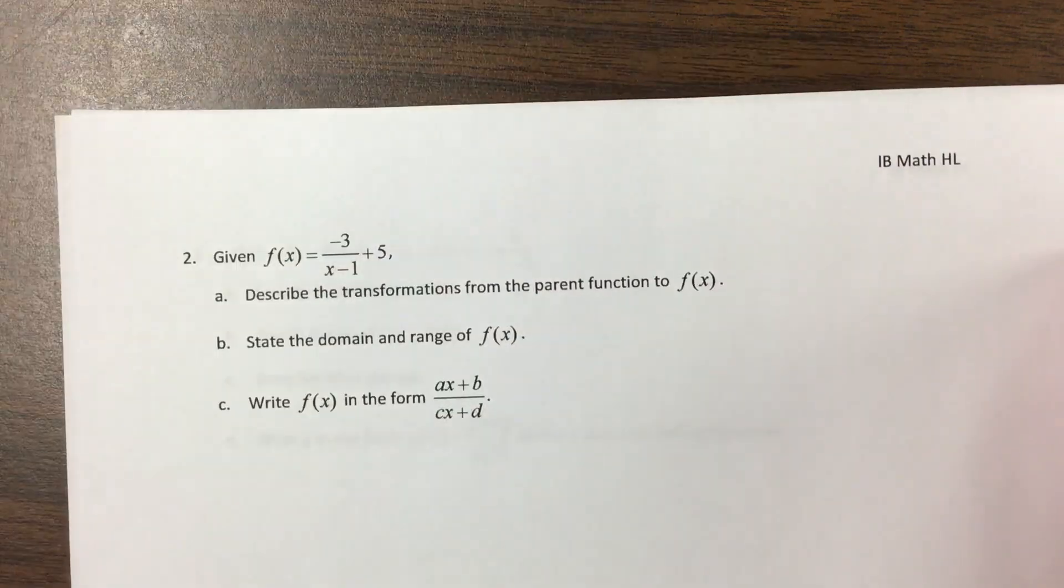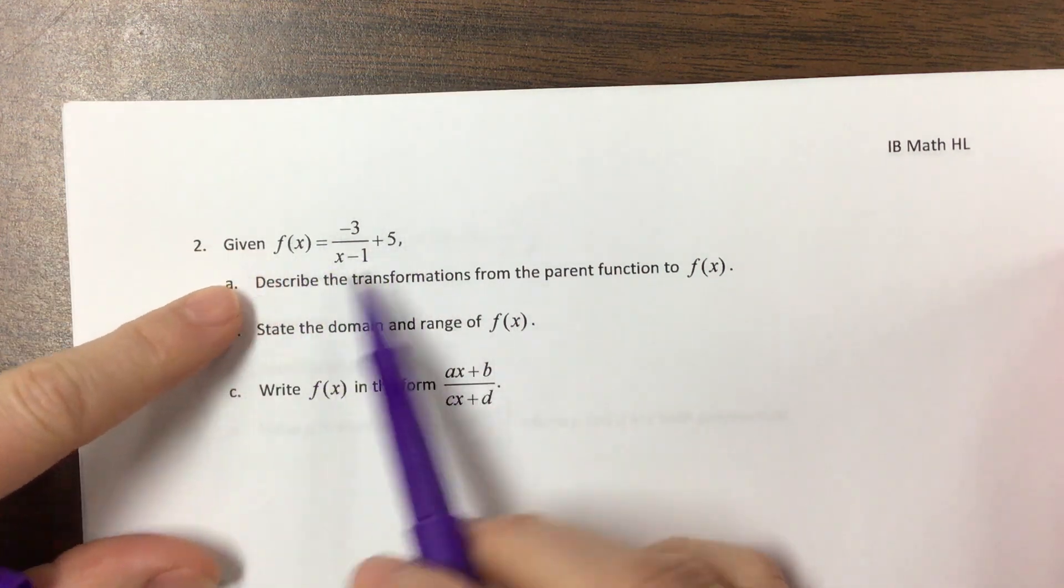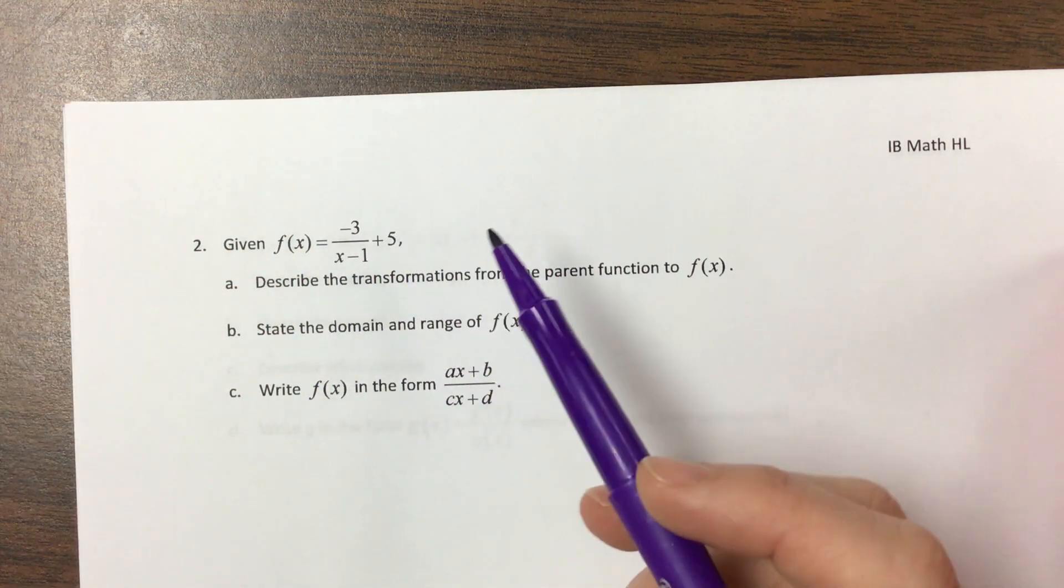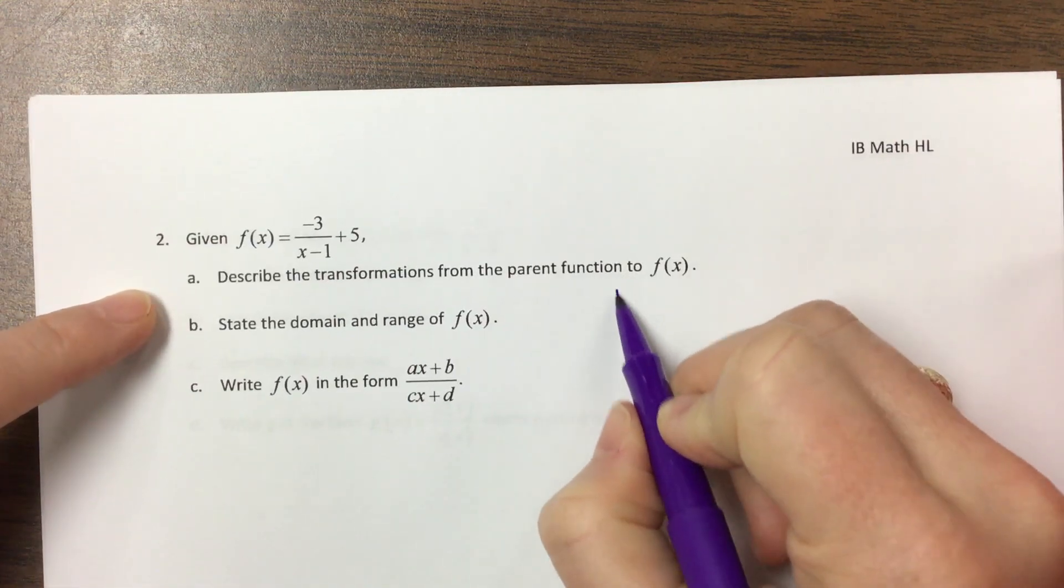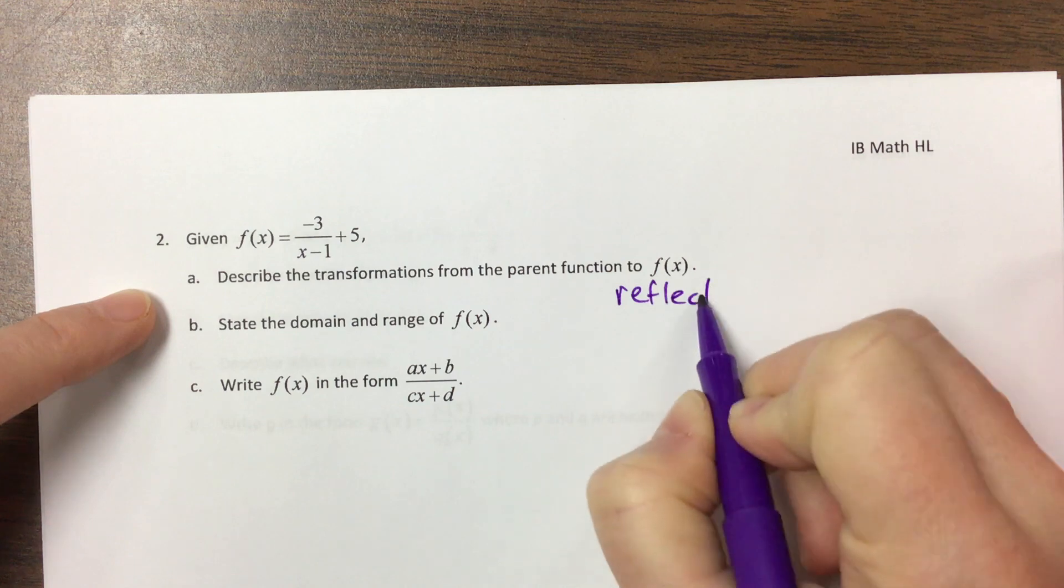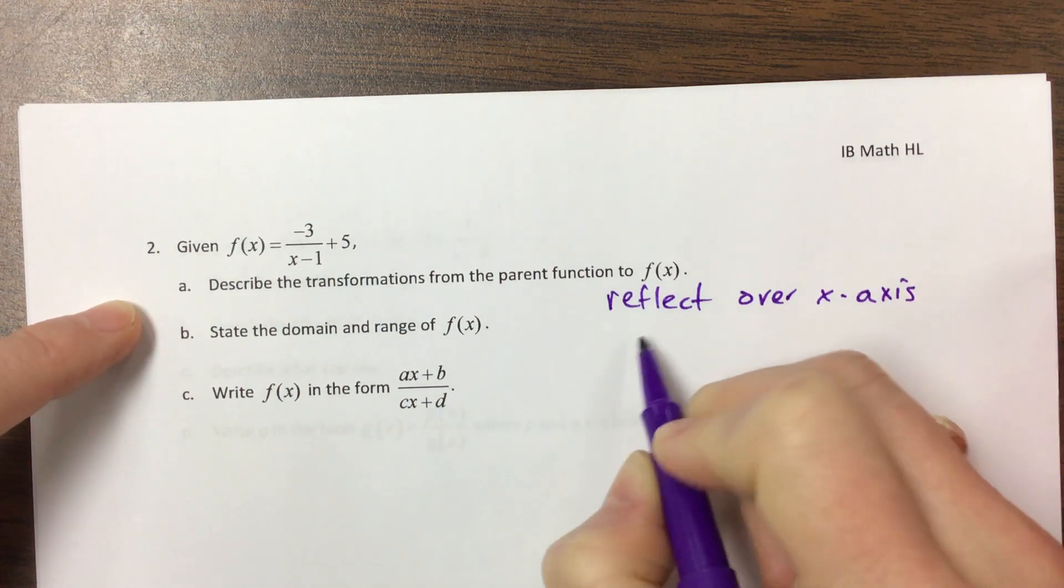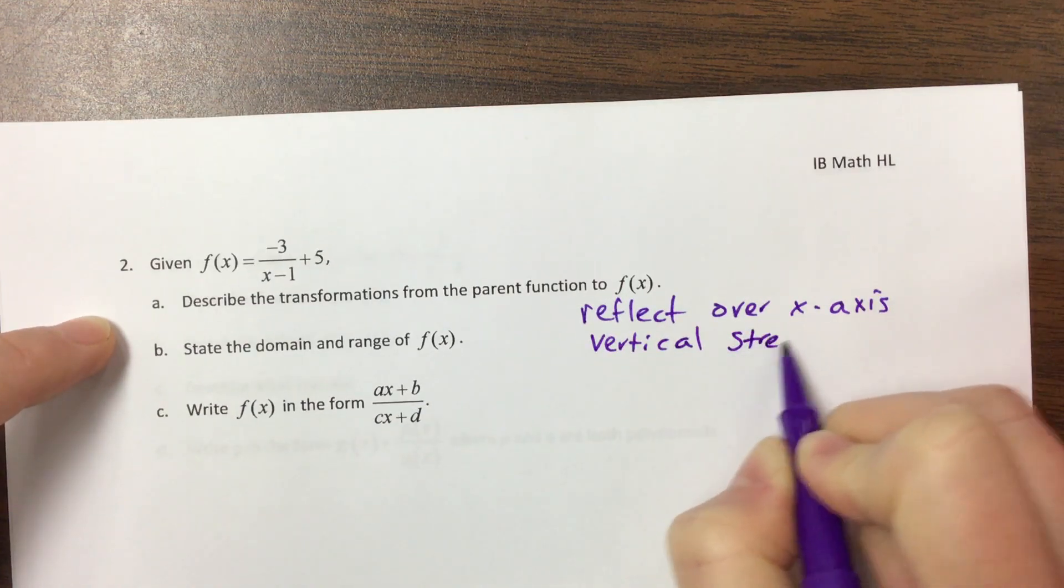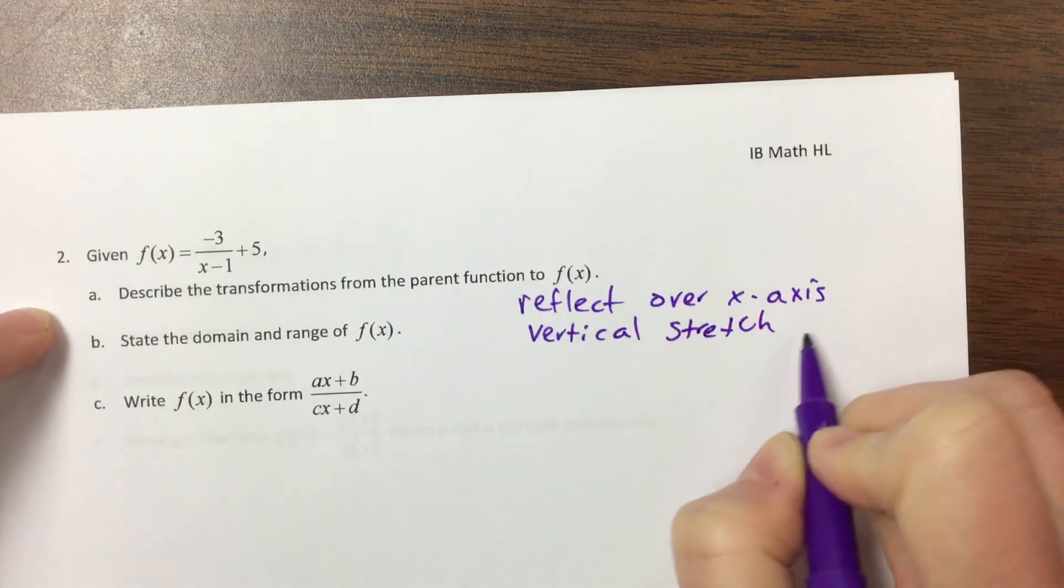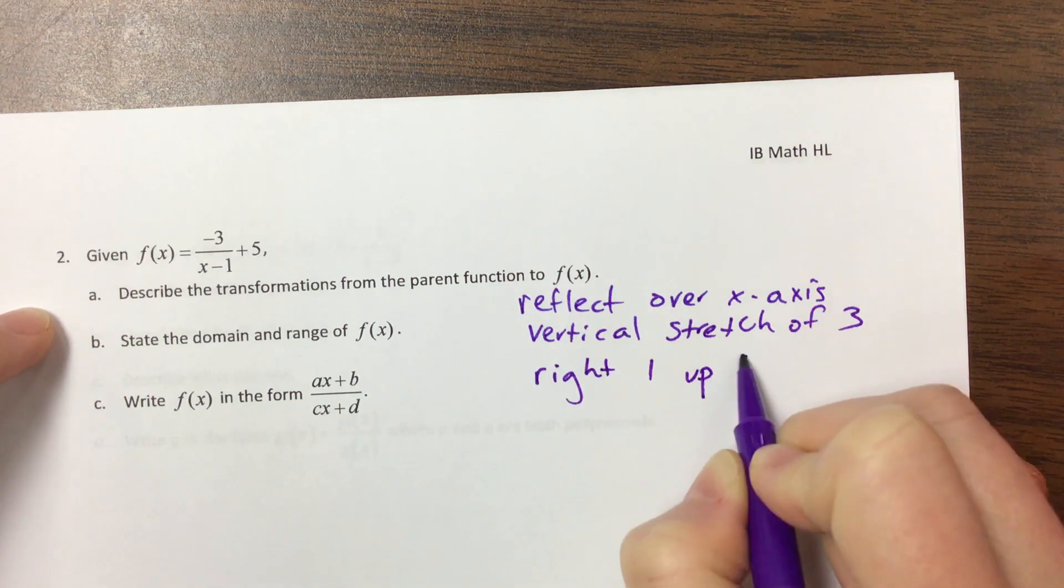Okay, so the next part, I think I can do two in one video. The next part, they've given me the equation in a form that's really easy to see the transformations. So describe the transformations. We reflect over the x-axis, vertical stretch of 3. We went right 1 and up 5.